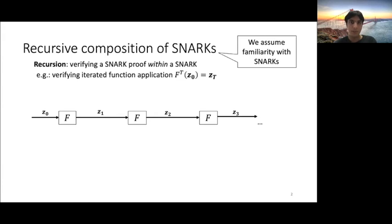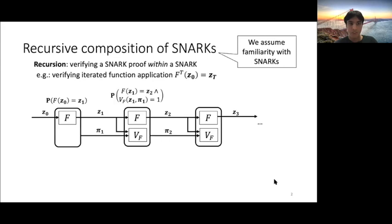The strategy to prove this is going to be to prove it iteration by iteration. First, I'm going to prove that f of z0 equals z1. And then to verify this, you just run the SNARK verifier on z1 and pi1. This convinces you that f of z0 equals z1. In the next iteration, we're going to prove that f of z1 equals z2, and that the verifier accepts the proof for z1. So when you go to check the proof for z2, you're inductively convinced that z1 is valid, and therefore z2 equals f of f of z0. And in the next iteration, you prove that f of z2 equals z3, and that the proof for z2 is valid. And again, inductively, you're convinced then that z3 is correct.